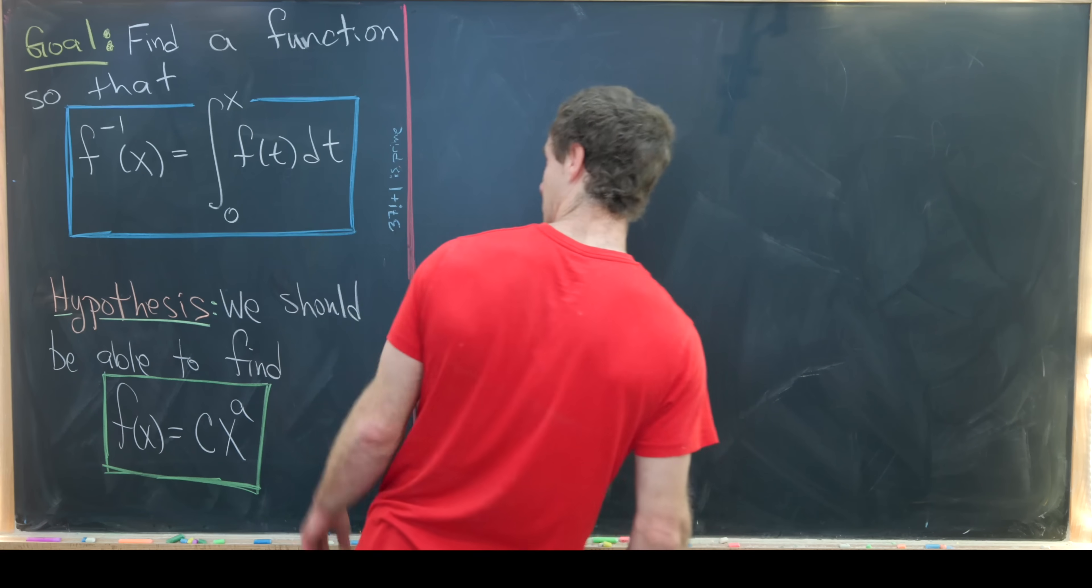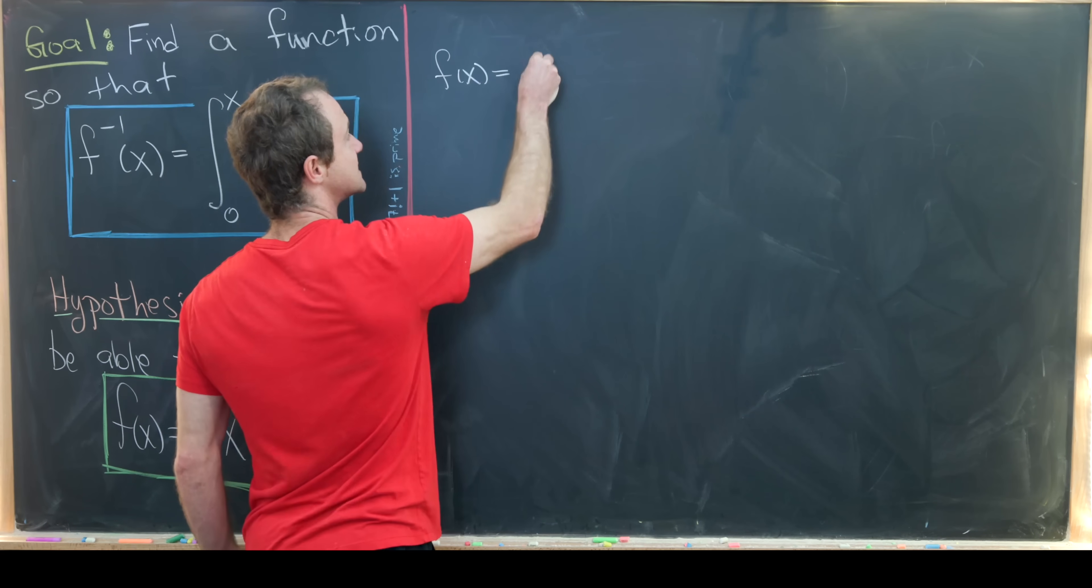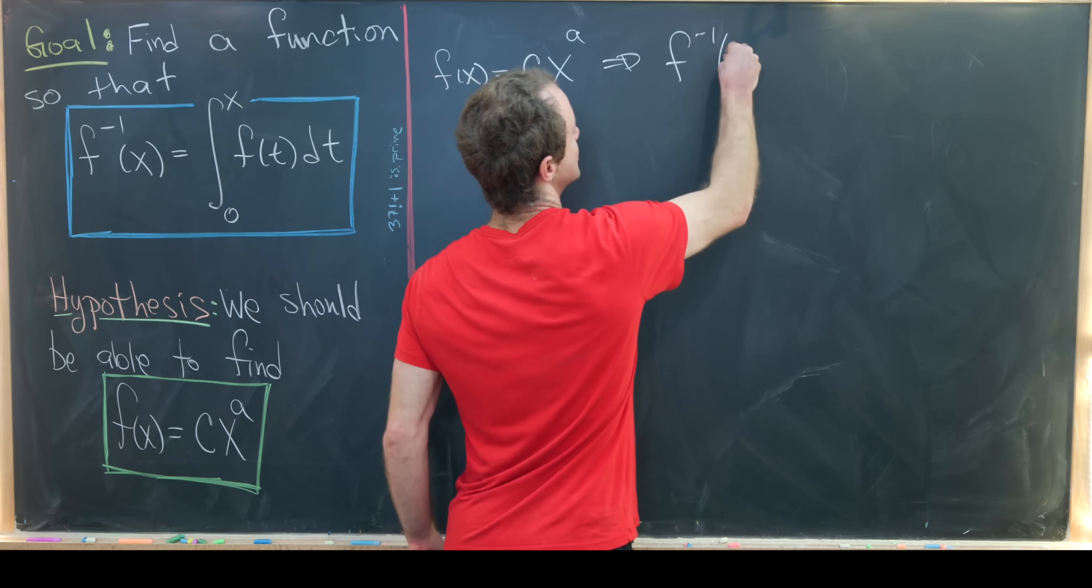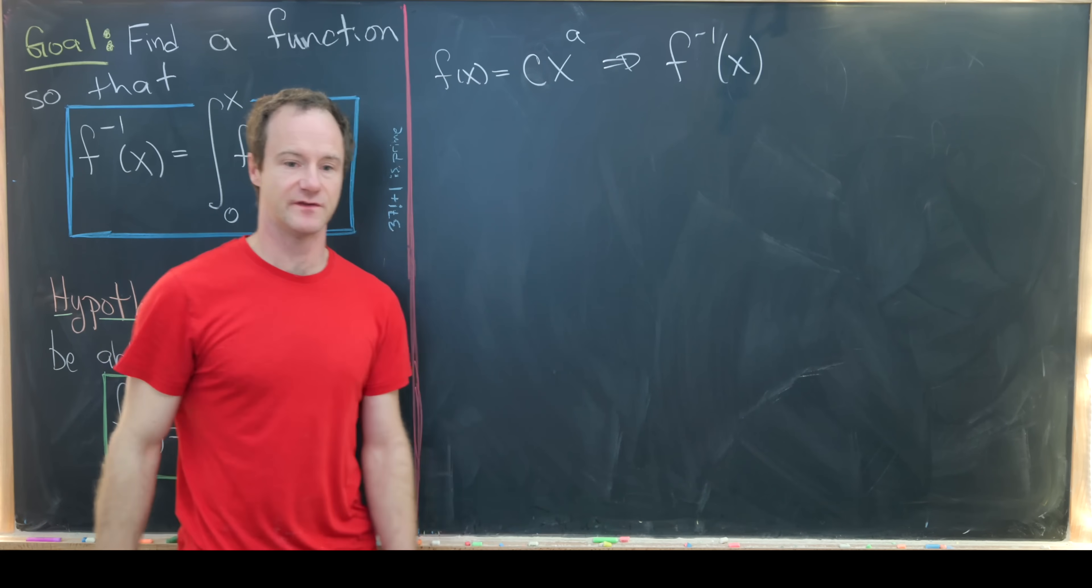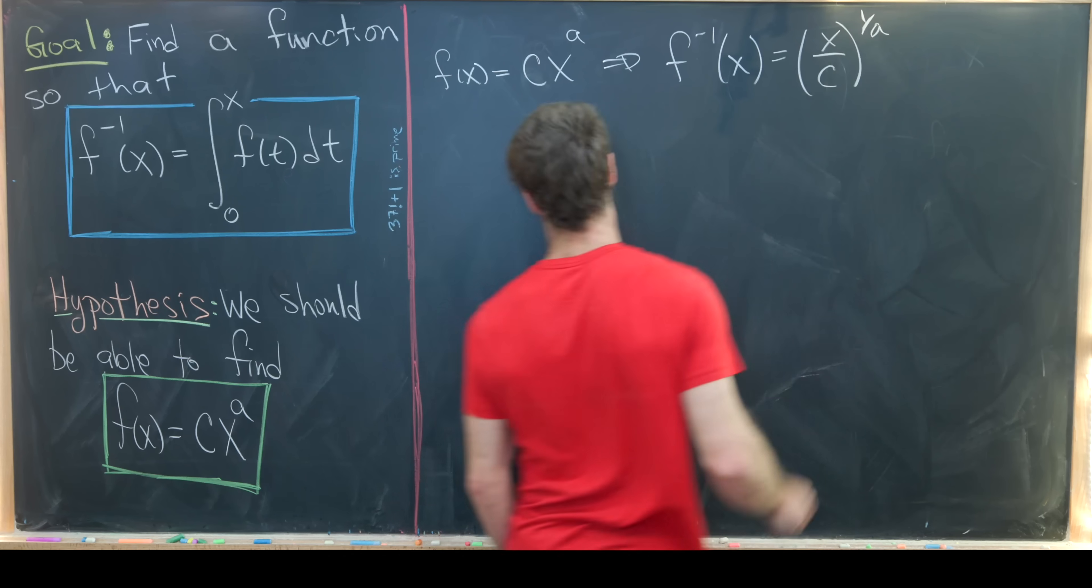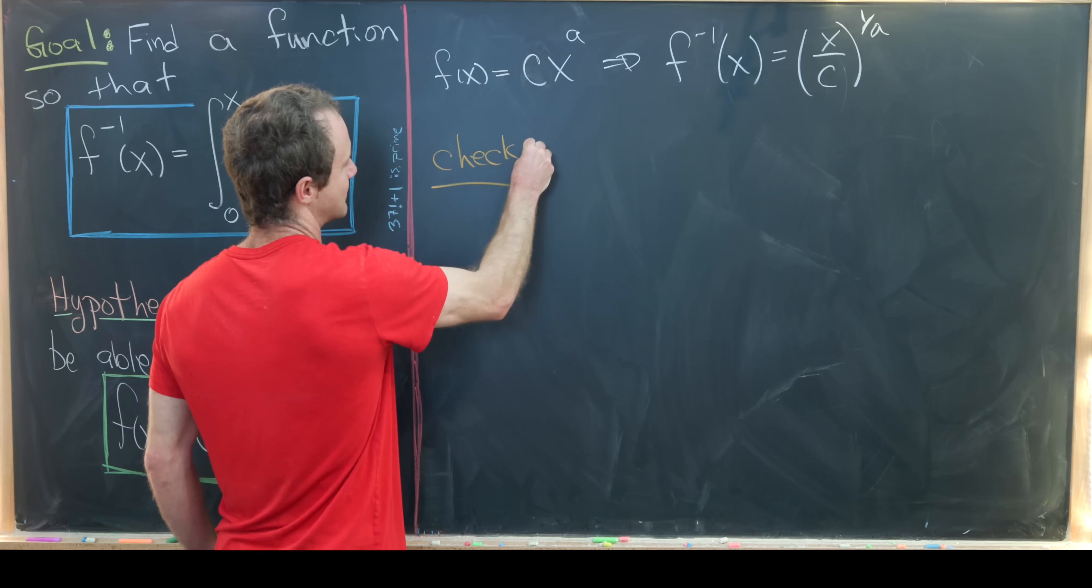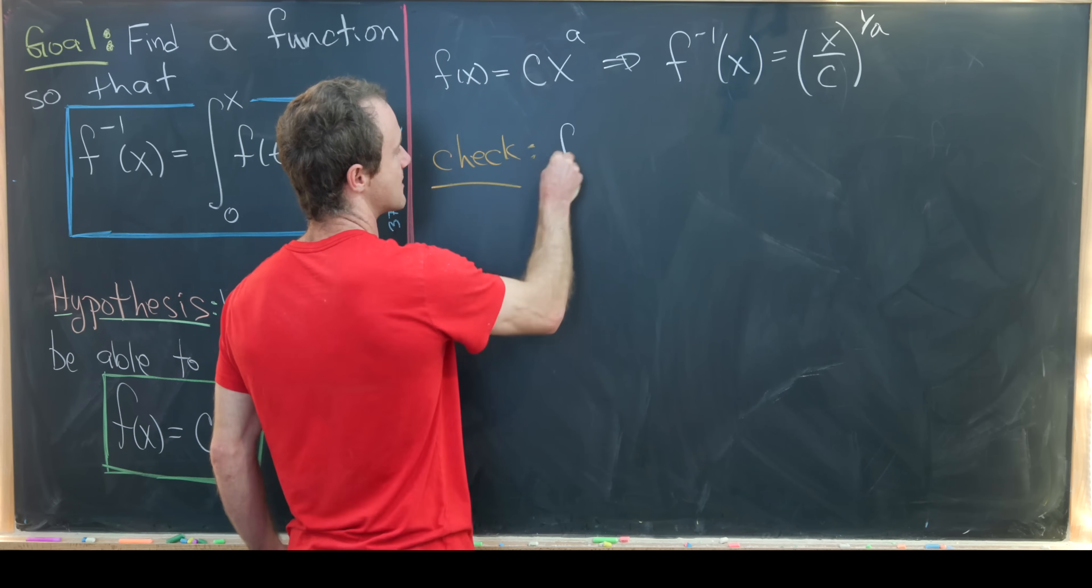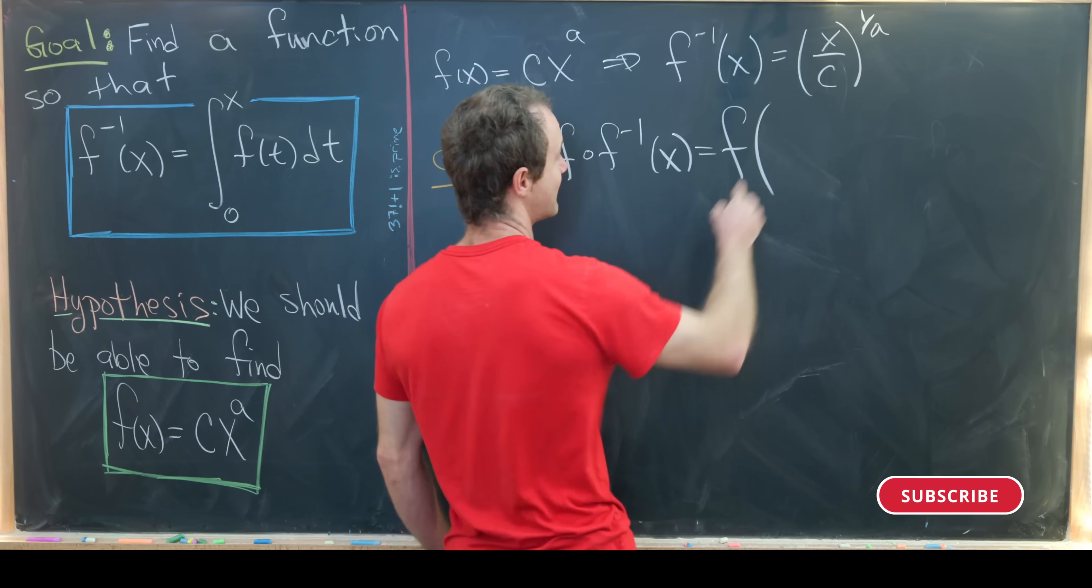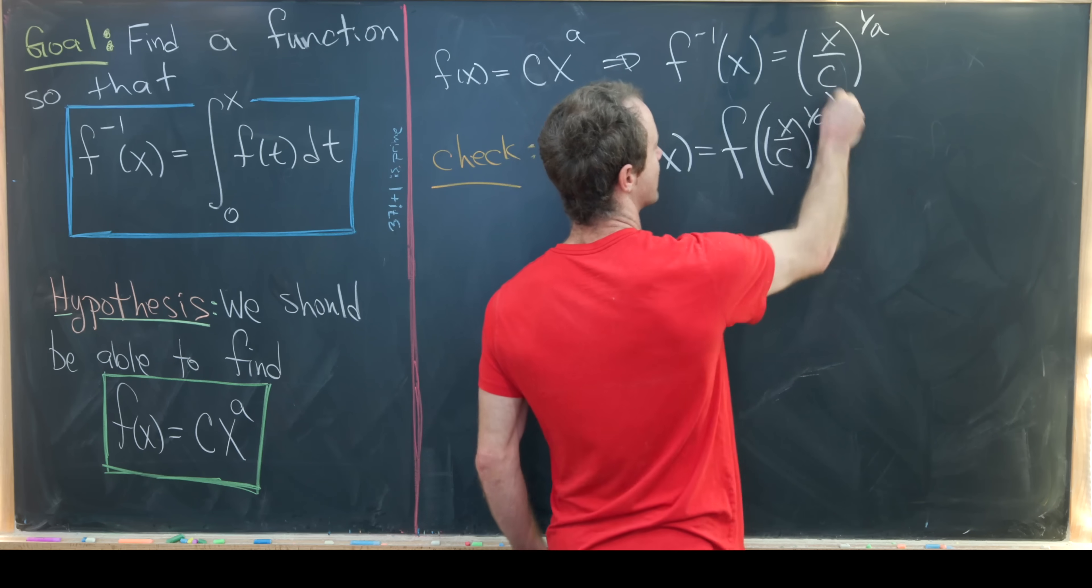Let's calculate the inverse function first. If we've got f(x) equals c times x to the a, then by a fairly straightforward calculation we can see that f inverse of x is (x/c) to the 1 over a. We can check that if we'd like. Let's do f composed with what I've called f inverse, so that's f with this object inside: (x/c) to the 1 over a.